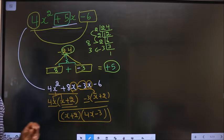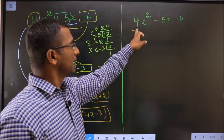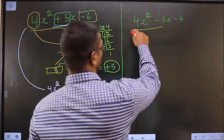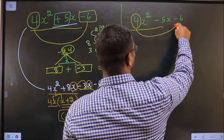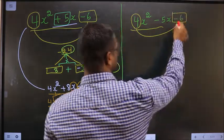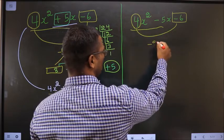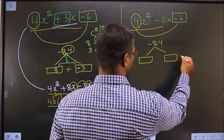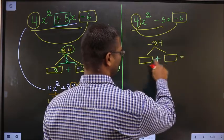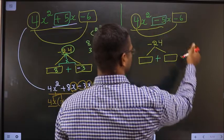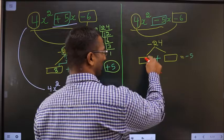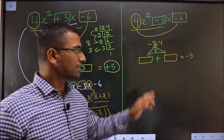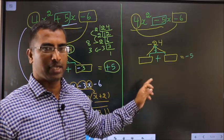I have factorized and this is the answer. Now, factorize 4x squared minus 5x minus 6. In step 1, whatever number you have here should be multiplied to the constant which is minus 6. So 4 into minus 6 is minus 24. You should look out for 2 numbers such that when you add the 2 numbers, you should get minus 5, and when you multiply these 2 numbers, you should get minus 24.